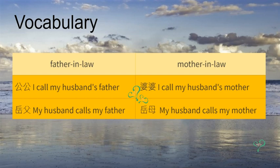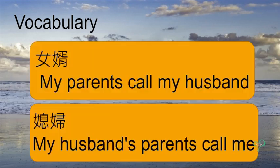Father-in-law and mother-in-law: 公公 is what I call my husband's father; 岳父 is what my husband calls my father. 婆婆 is what I call my husband's mother; 岳母 is what my husband calls my mother. 女婿 is what my parents call my husband. 媳婦 is what my husband's parents call me.